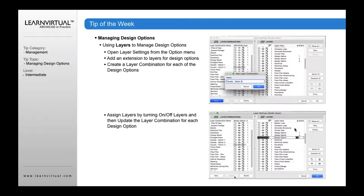To manage this, you work in your layer combinations. Once you create those design option layers, you create layer combinations to manage which layers are on and off for each design option. For example, you create a new layer combination called facade option three, turn the facade option three layer on, and turn it off for the other layers. Then click the update button to update that layer combination so that in the future when you select it, design option three is on and all other layers are updated accordingly.